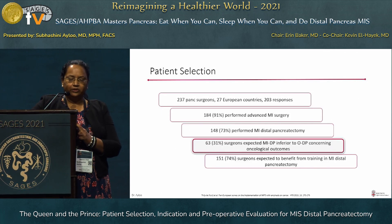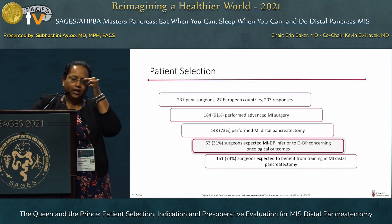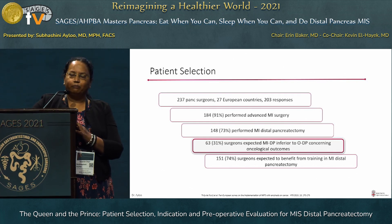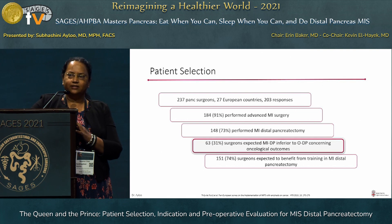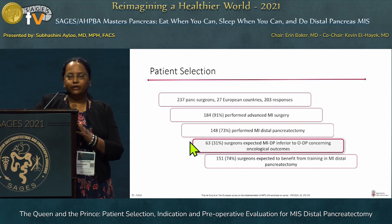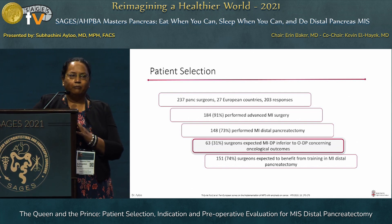This is one study from the Netherlands where they surveyed 237 pancreatic surgeons, and out of those, they considered 203 responses from 27 European countries. The surgeons reported that 91% perform advanced MIS surgery and 73% have done MIS distal pancreatectomy. What was concerning was that a quarter of those surgeons suspected inferior outcomes from performing MIS distal pancreatectomy in terms of oncological outcomes — lymphadenectomy, margins, and survival. This survey was performed in 2014 and published in 2016.